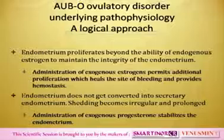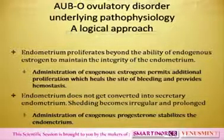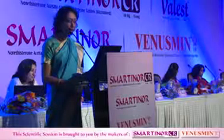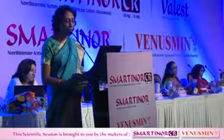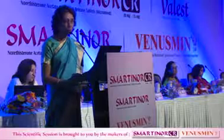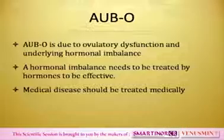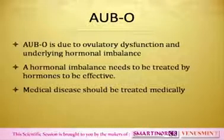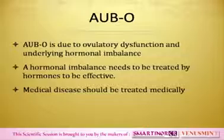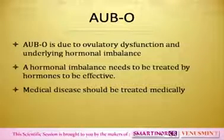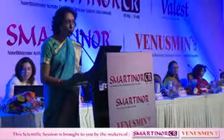When the endometrium proliferates beyond the ability of endogenous estrogen to maintain integrity, it breaks down and bleeds. In that situation you need more estrogen to make it more stable. The endometrium can also be converted into secretory endometrium, making bleeding more predictable. If progesterone is not there, shedding becomes irregular and prolonged, in which case you need progesterone to control the bleeding. There are definite subsets of AUBO which cannot be treated by anything other than hormonal treatment.